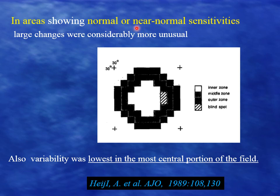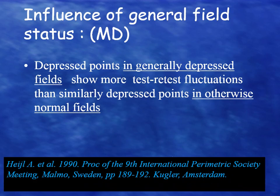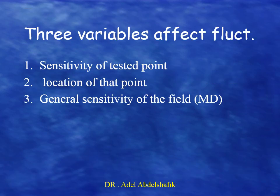In areas with normal or near-normal values, if the location is in the center, the fluctuation is minimal; but if the point is in the periphery, the fluctuation is high. So the second factor is the location of the test point. The same paper also showed an effect of the mean deviation of the whole field: depressed points in a generally depressed field show more test-retest fluctuation than similarly depressed points in an otherwise normal field. So fluctuation varies depending on the sensitivity of the test point, the location of the test point, and the mean deviation of the whole field.